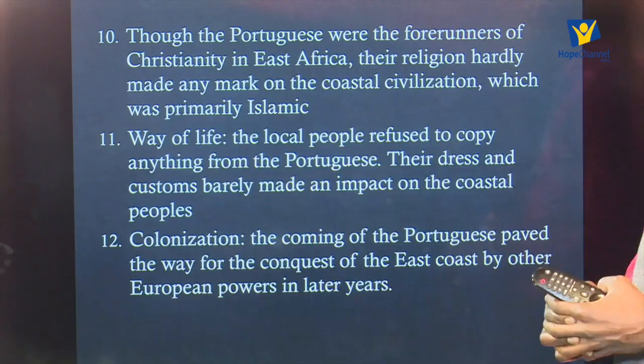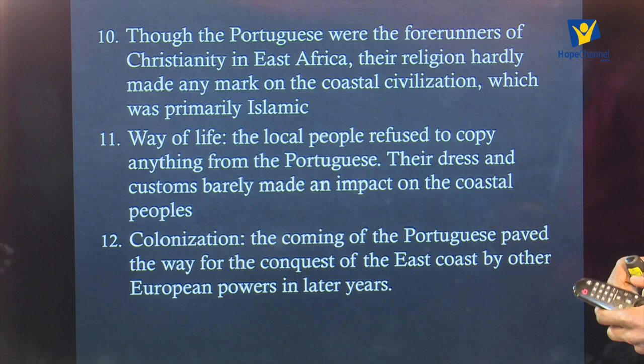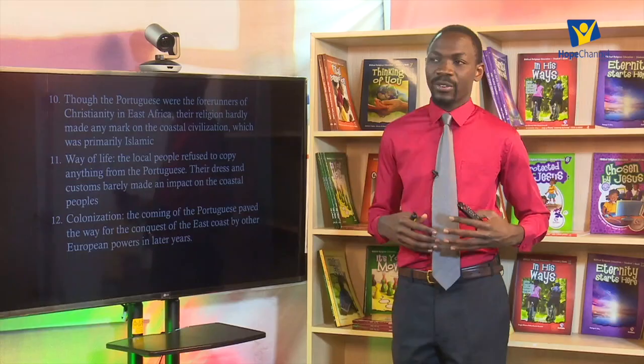Number twelve, colonization. The coming of the Portuguese paved the way for the conquest of East Africa by other European powers in later years. They opened up East Africa, and that encouraged other European powers to come in. There was nationalism — some countries trying to appear superior to others — so because the Portuguese came, other European nations also came to entrench their colonization, opening up East Africa for colonization.